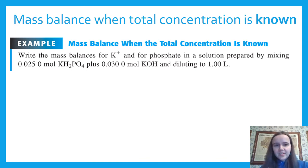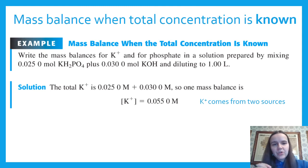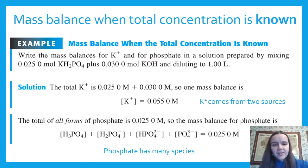If you have multiple things added to the sample but you know what you put in, you can have multiple mass balance equations. For example, mixing 0.025 mol of KH₂PO₄ and 0.030 mol of KOH diluted to one liter: for potassium, [K⁺] = 0.025 + 0.030 = 0.055 M because potassium dissolves completely. For phosphate, all forms of phosphate sum to 0.025 M. That's an example of a system with two mass balances.